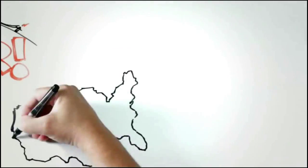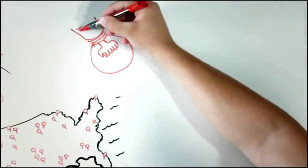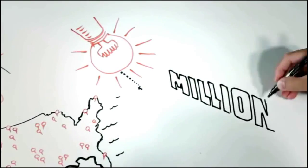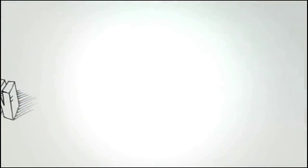Soon electric cooperatives popped up all across the country, transforming the way of life in rural America. Today there are more than 900 electric co-ops in the US, bringing electricity to some 42 million Americans. So how do cooperatives work?